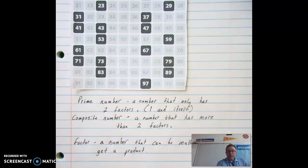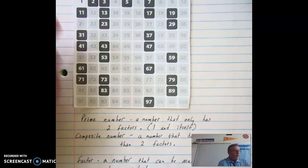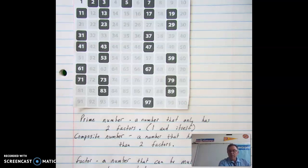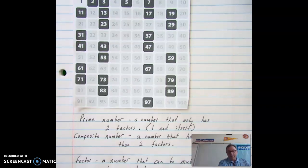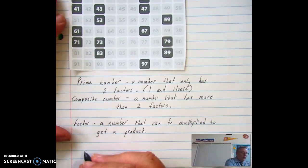What are the factors of two? One times two. One times seven. Let's choose a composite number. Let's say we go up here and we say, what are the factors of 14? Well, you can do one times 14 and you can do two times seven. Those are factors and it's more than two. So that makes it a composite number. Okay, a couple things.